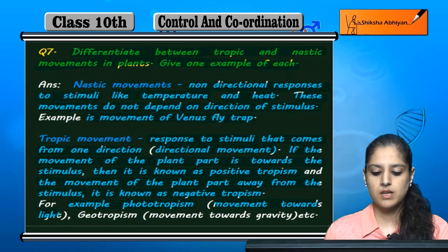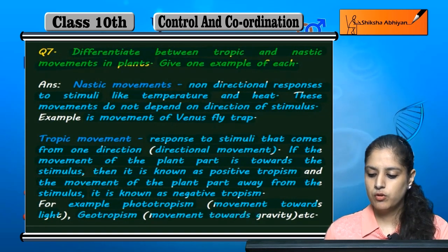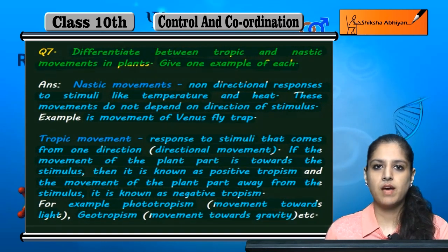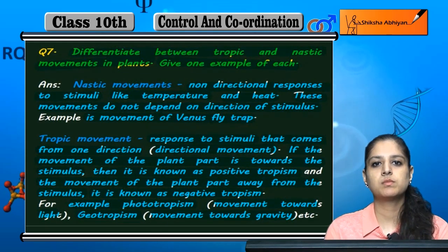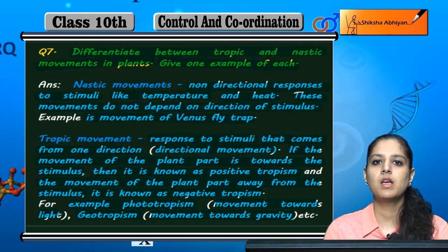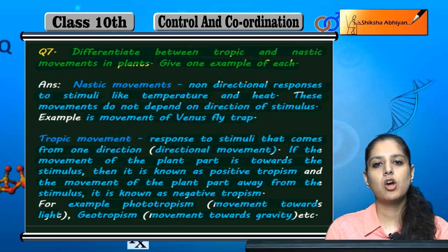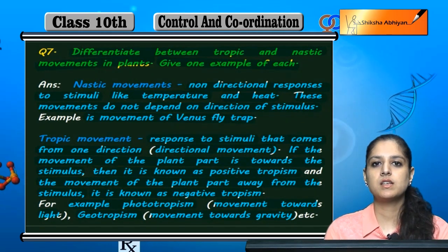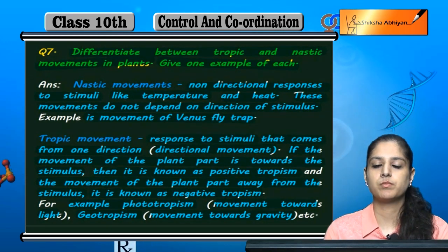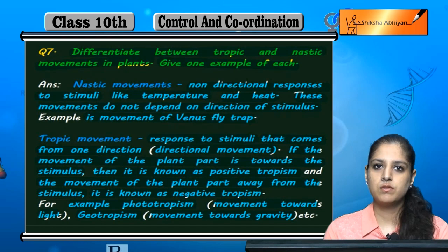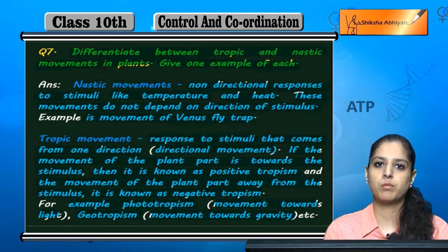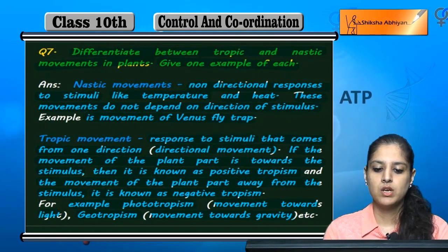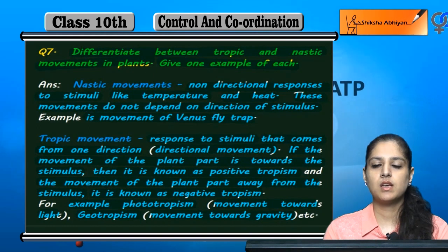Geotropism is next — it is movement towards gravity. Roots grow in the direction of gravity (positive tropism) and stems grow in the opposite direction of gravity (negative tropism). That is geotropism. This is the difference between nastic and tropic movements.